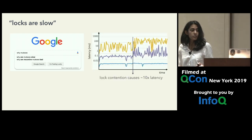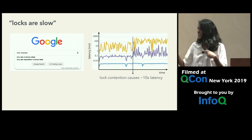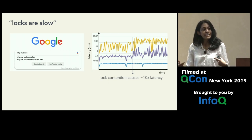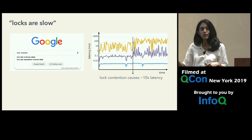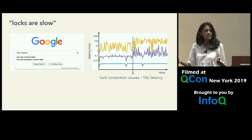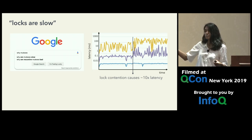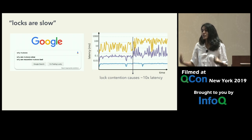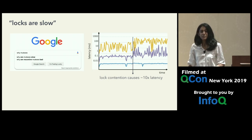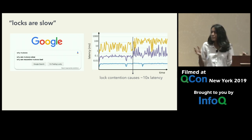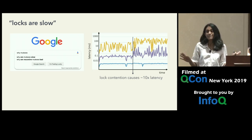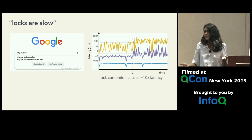Here's an example from one of our production services. This is a graph of a service that's a critical component of our read pipeline, so we care a lot about the latency of this service. This graph, from pretty recently, shows the latency went up by about 10x. And we traced this down to lock contention. So we know locks — better be kind of cautious. Better yet, try and not even use them.